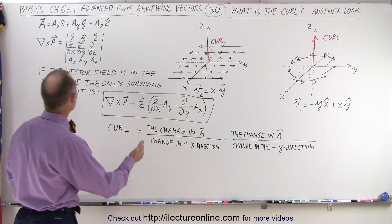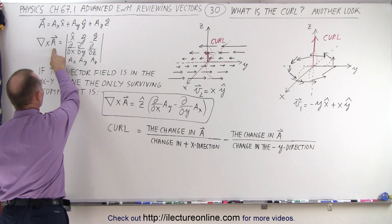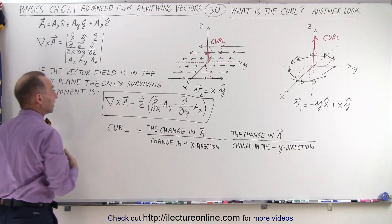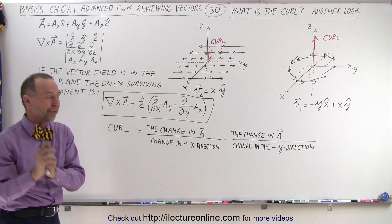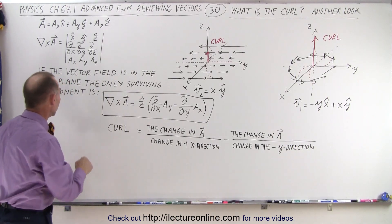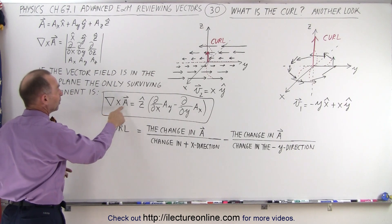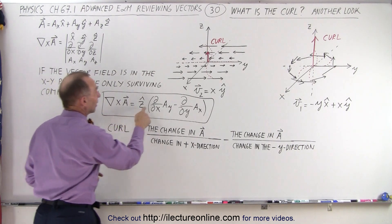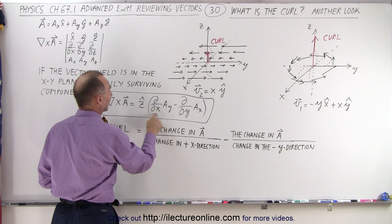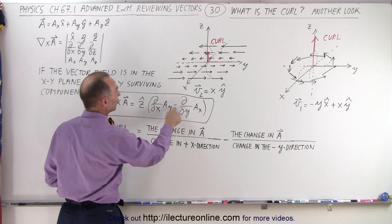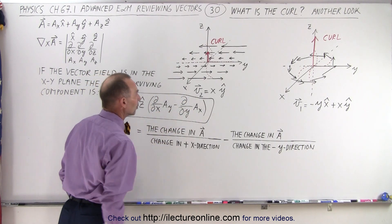If we take the del operator and multiply it by the vector field via the cross product, we will only have a single surviving term — the z term. Essentially, the curl becomes equal to the z component times the partial derivative with respect to x of the y component, minus the partial derivative with respect to y of the x component.